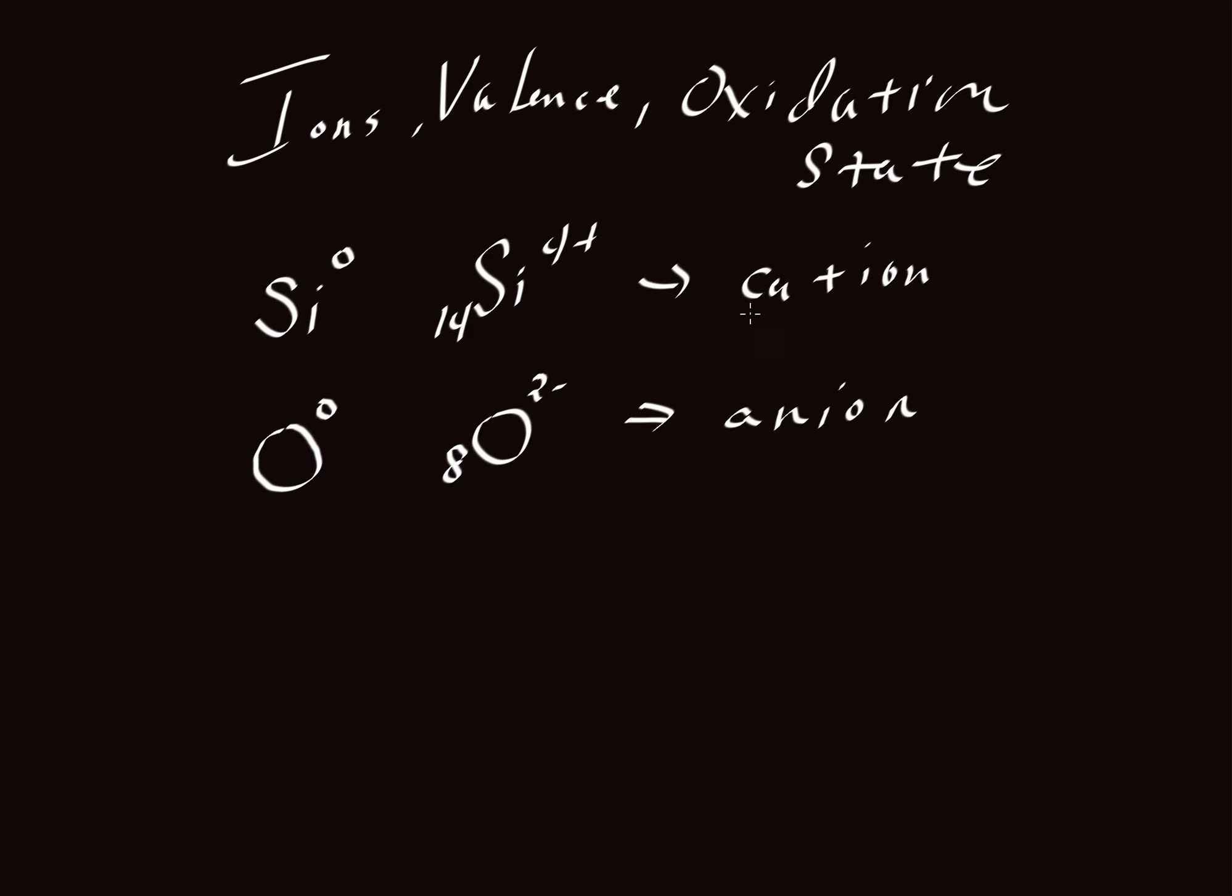So a cation is any atom with a positive charge. And an anion is anything with a negative charge. And so we've just given two examples, but there are many others. For example, sodium is commonly in the one plus state. That would be a cation. And then fluorine, very commonly with a minus one charge. So that qualifies as an anion.